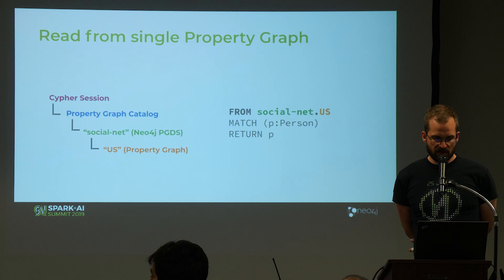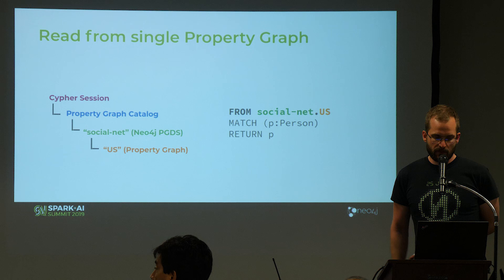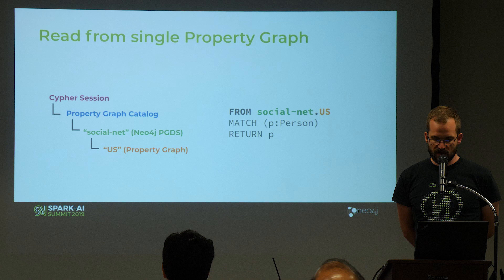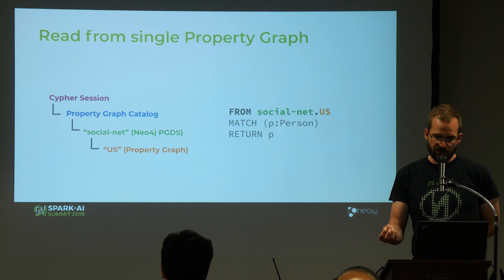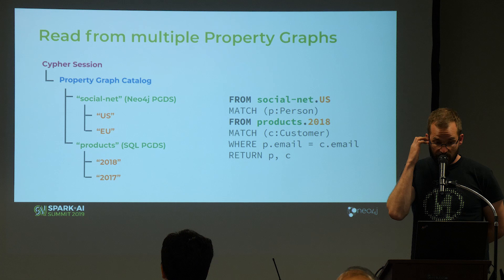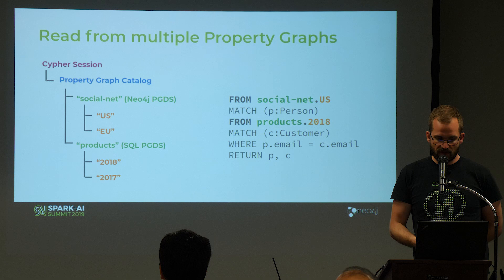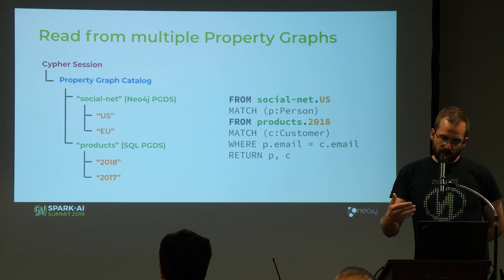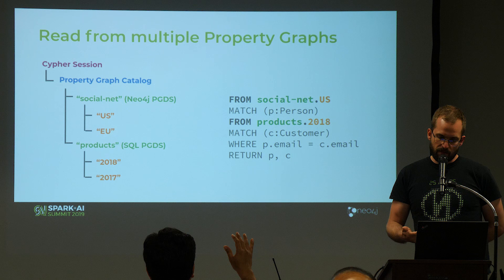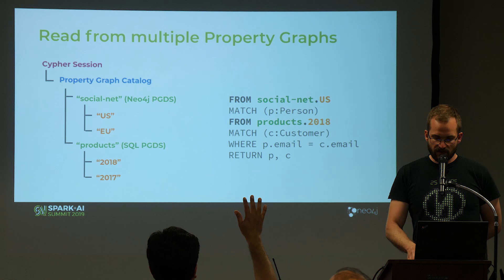Looking at how queries work: we have a namespace 'SocialNet' and register the Neo4j property graph data source under that namespace, which contains a graph with the name 'US.' To address this graph in a Cypher query, we say FROM SocialNet.us, then match all persons and return them. If you have multiple namespaces — for example SocialNet and Products — one graph can be in Neo4j and other graphs in SQL. A query can get persons from the Neo4j graph SocialNet.US and customers from the SQL graph Products.2018, match persons and customers on their email address, and bring them together — essentially a federated query system.